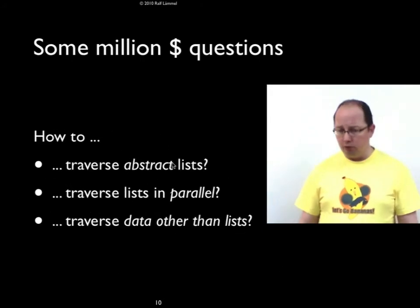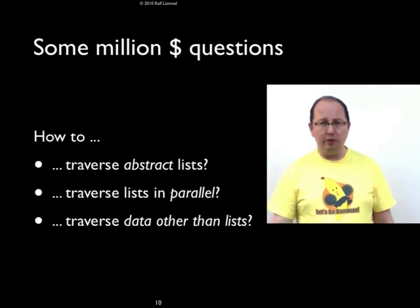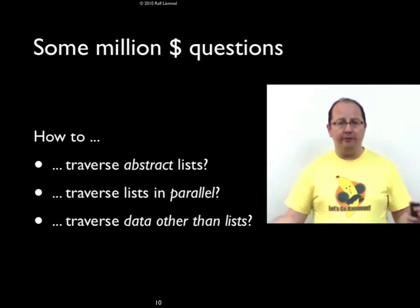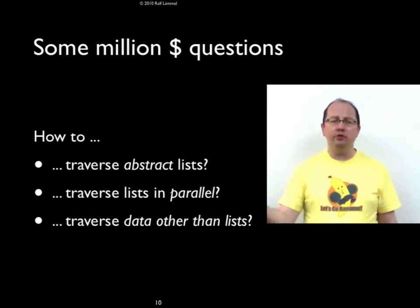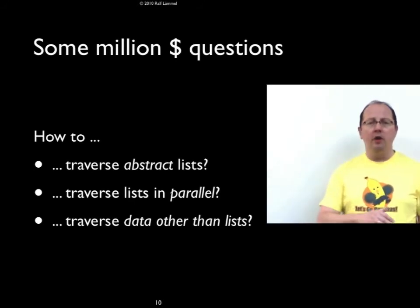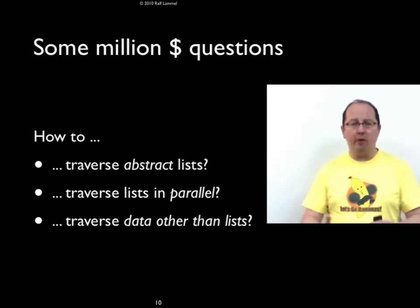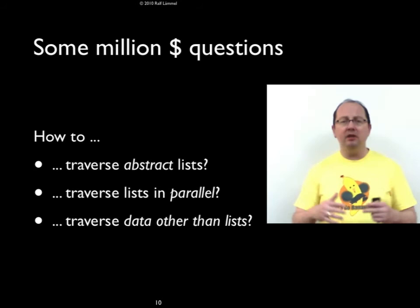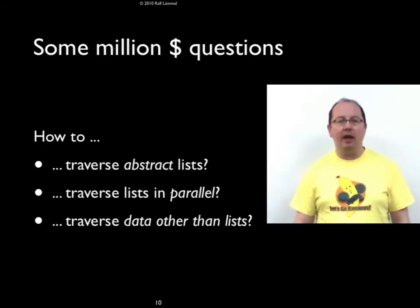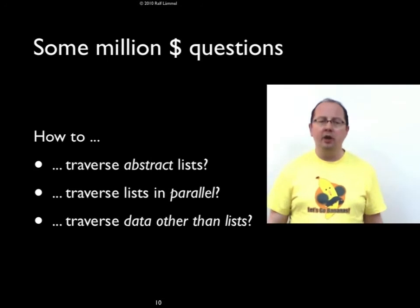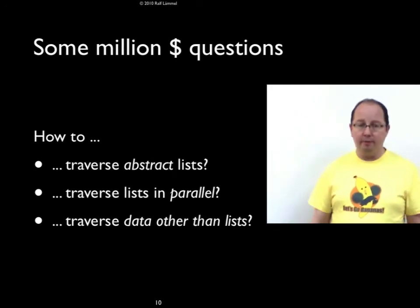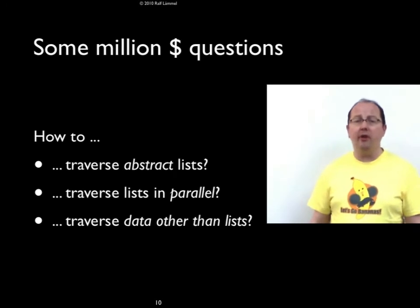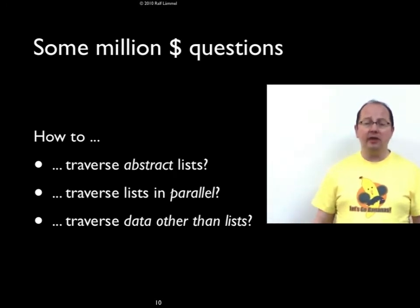This brings us to an intermediate summary: we now understand the role of fold R, its generality and expressiveness. Let's try to push the story towards abstract lists. So far we have dealt with concrete Haskell lists. Can we deal with other kinds of container types? And then let's see how we can use the notion of bananas in the context of parallel data processing, and also push further to process data other than lists — for example, abstract syntax trees with folds rather than lists.